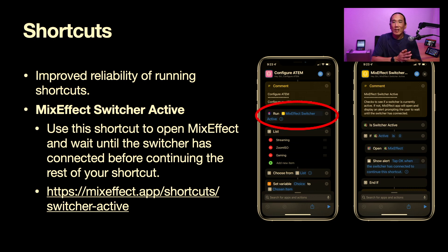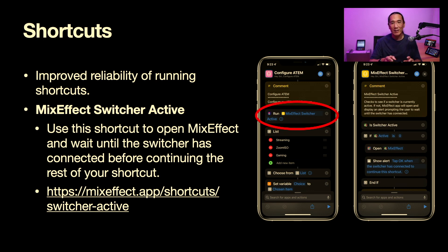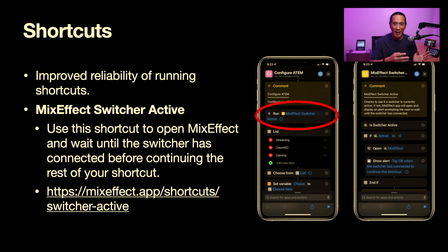The next thing is some improvements to shortcuts. Shortcuts is a very powerful way to control your ATEM using conditional logic. You can actually query the state of the ATEM — like, is the downstream keyer on? And if it is on, turn it off; if it's off, turn it on — all in just one shortcut. So you don't have to have a macro for turn on and turn off separately. There were some problems with running shortcuts on the iPad — it would sometimes bring an error saying it could not connect to the app — and I finally figured out the problem, so shortcuts should be much more reliable when you're launching them.